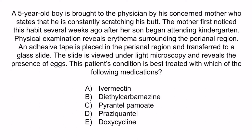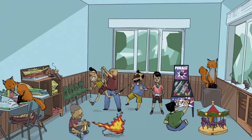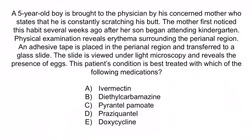Let's go through a couple of key points. The boy has been constantly scratching his butt, and this began after he started attending kindergarten. An adhesive tape placed in the perianal region revealed the presence of eggs when viewed under light microscopy. Collectively, these findings are diagnostic for pinworm, and the treatment for this parasitic infection is pyrantel pamoate. So the correct answer is C. From the image, recall that the pyro boy with PAM spray is here to help you remember that pinworm can be treated with pyrantel pamoate. The other answer choices are antiparasitic medications, but none of them are used to treat pinworm. Remember, pinworm can be treated with bendazoles or pyrantel pamoate. So the correct answer is C. And with that, we've covered everything you need to know about pinworm.